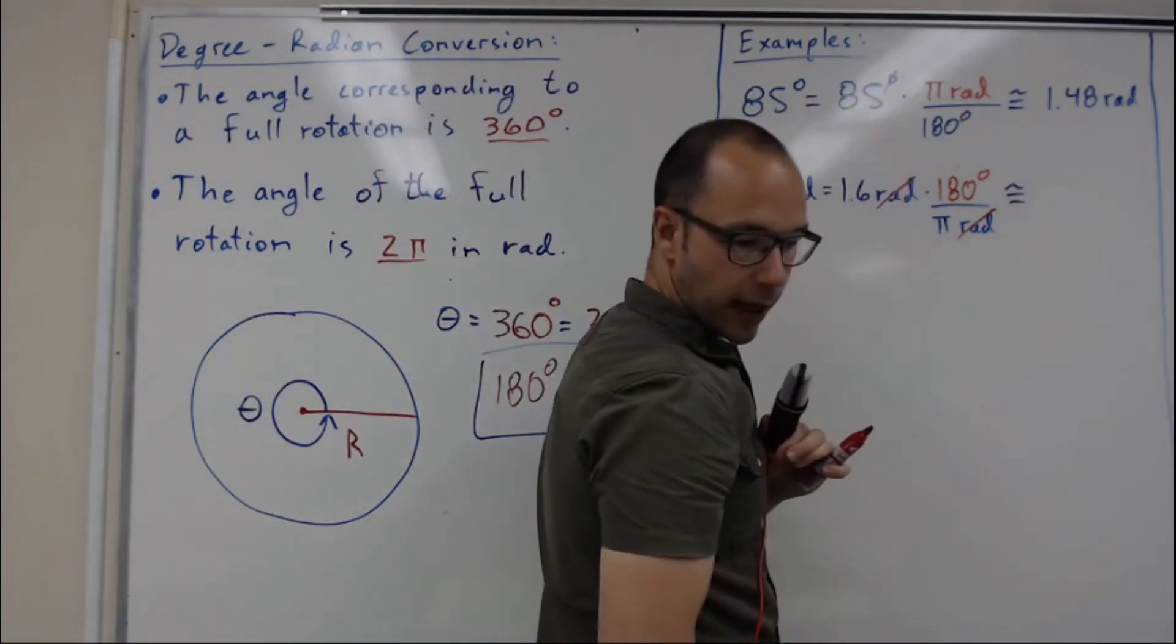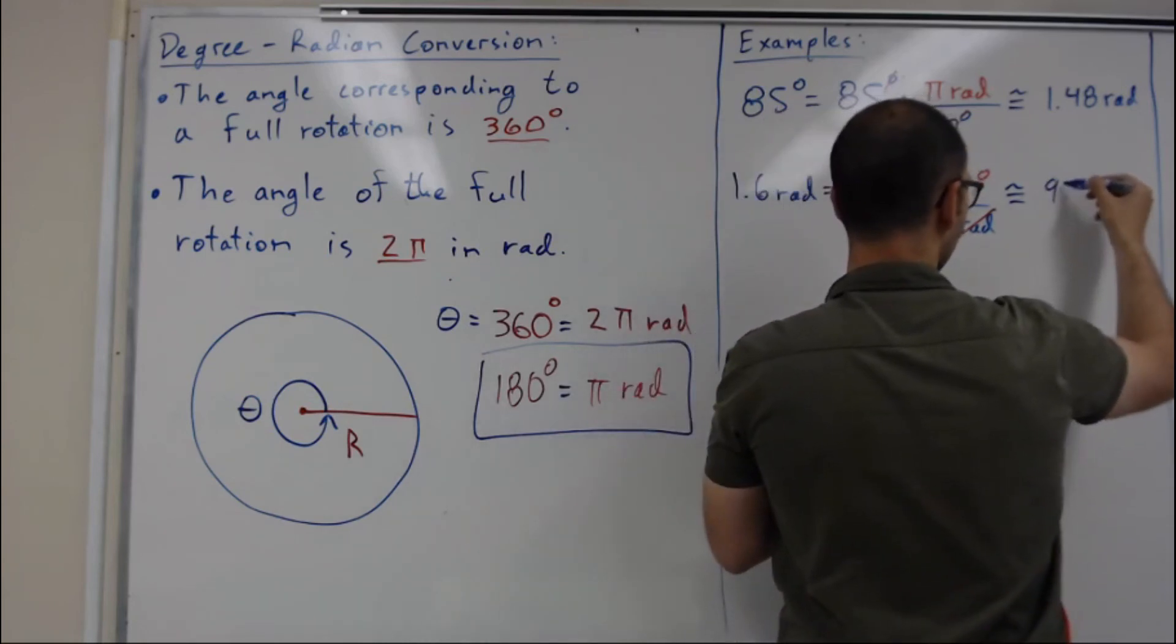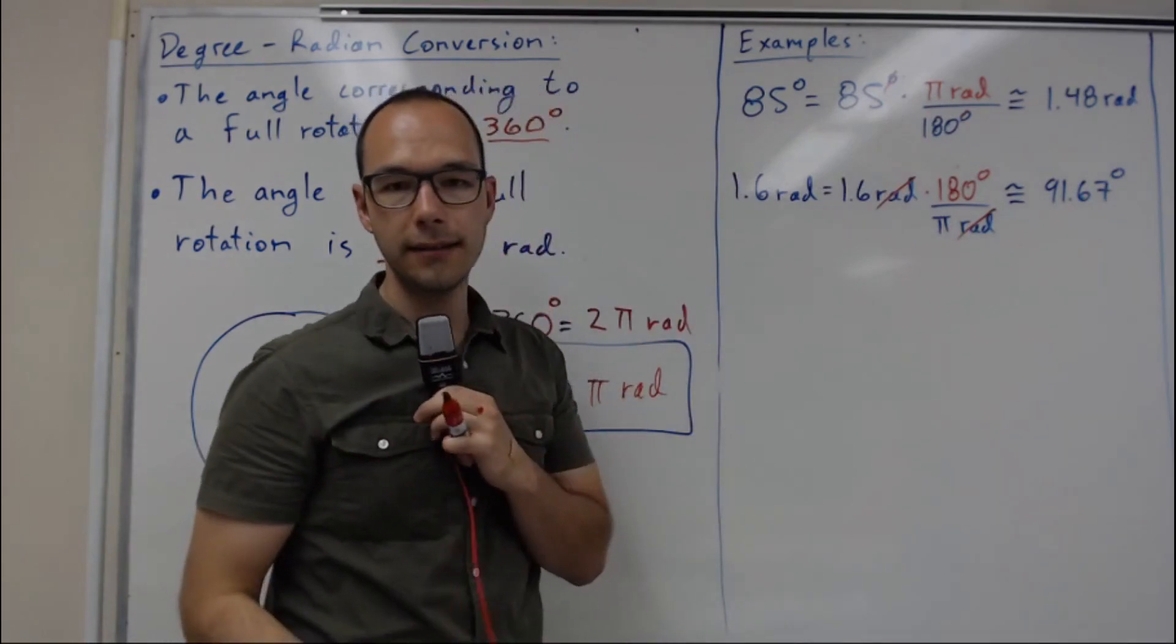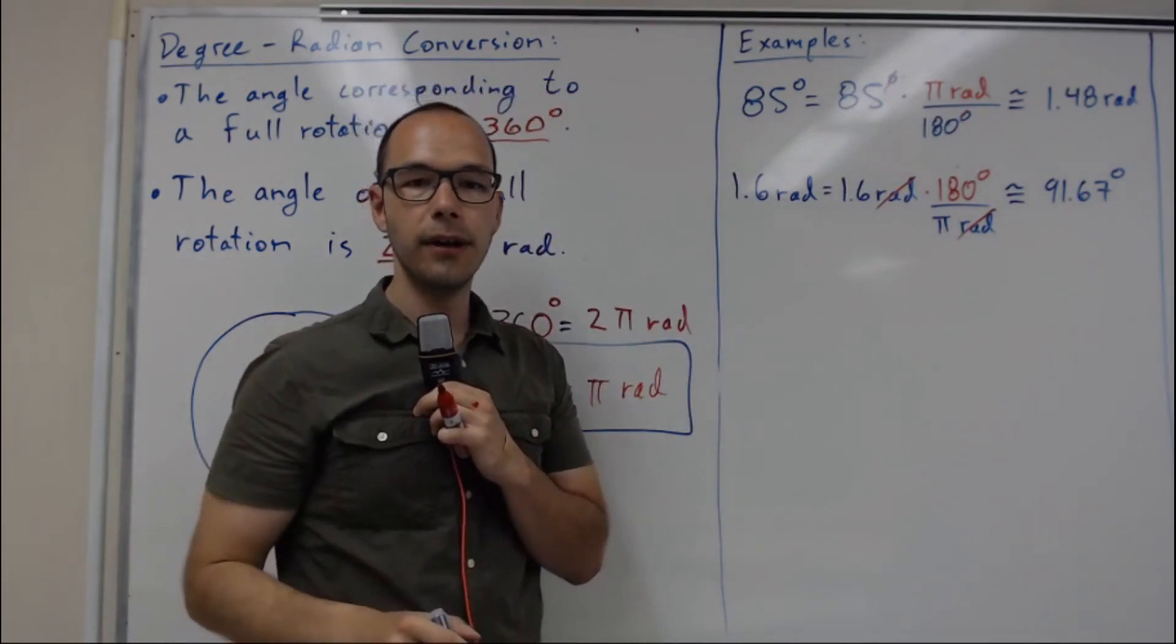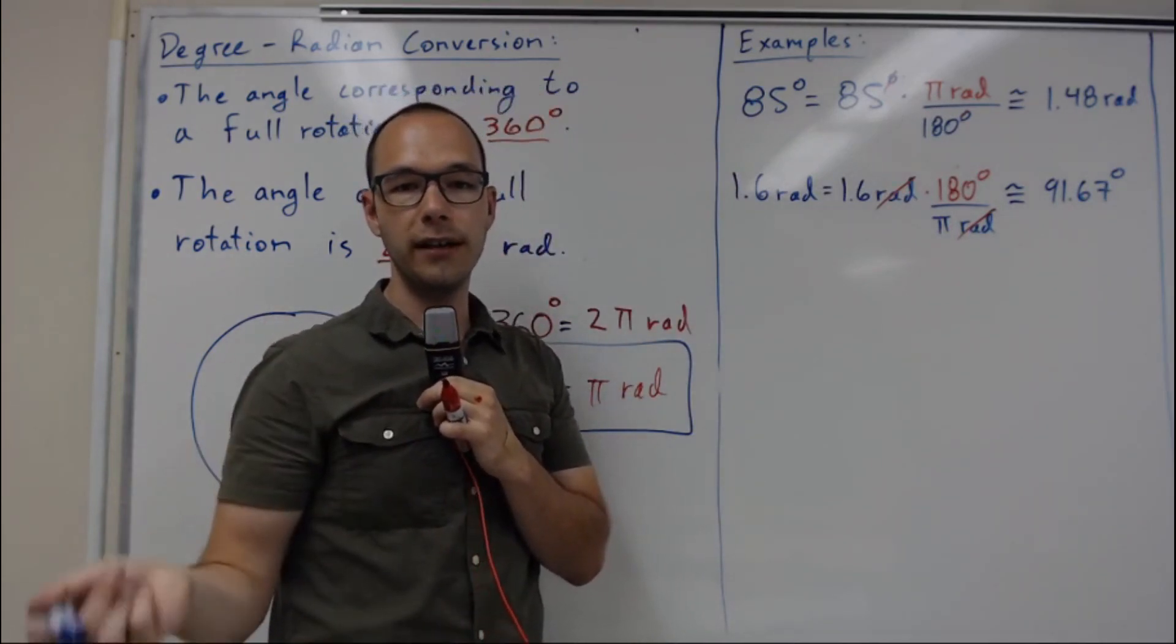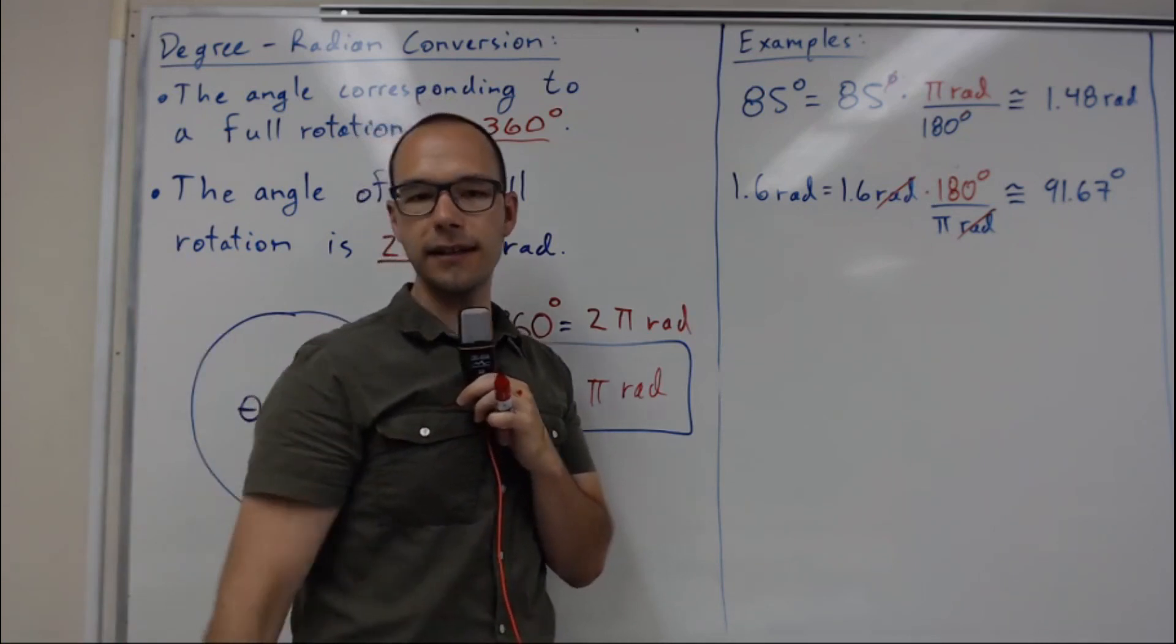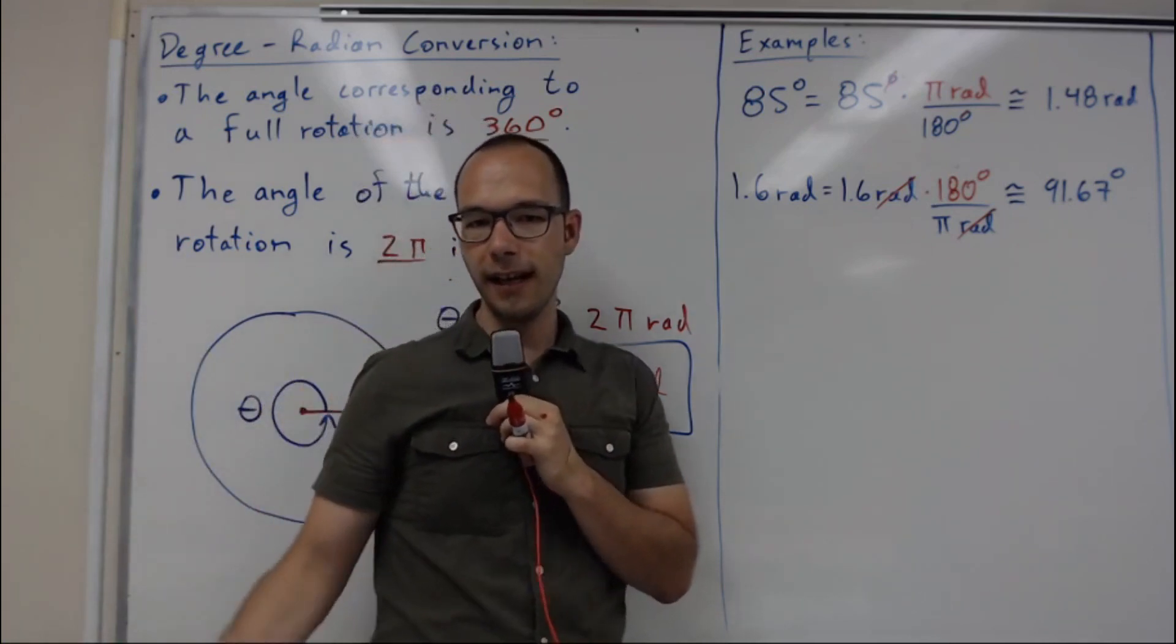91.67 degrees rounded to two decimals. So that's how you convert degrees into radians and radians into degrees. Thanks for watching, and see you in the next video.